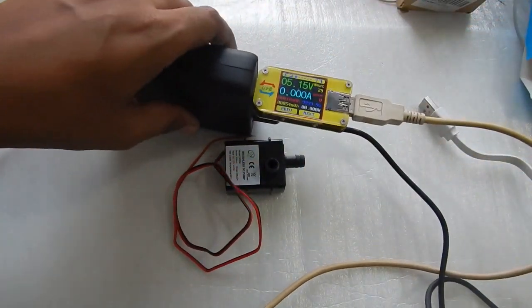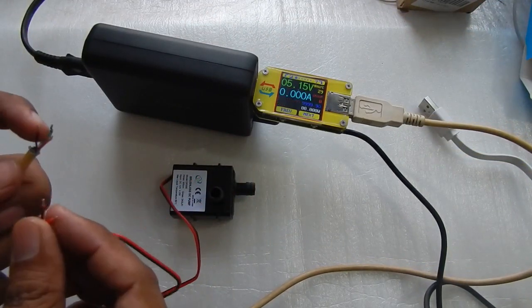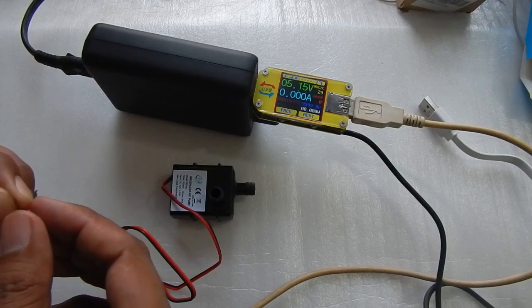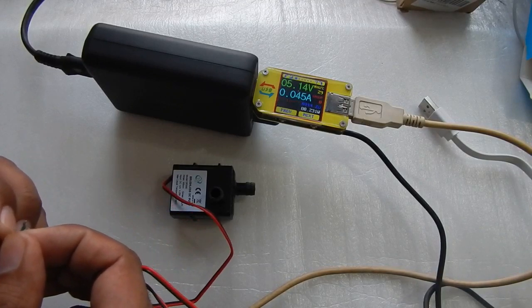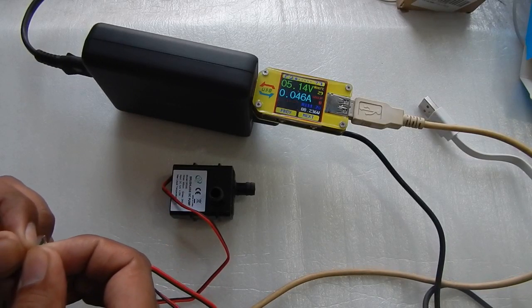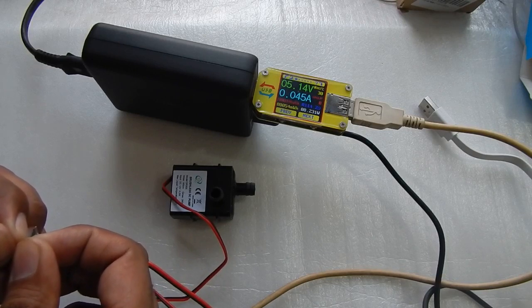You can see we are getting 5 volt and when I connect the pump to the wire we should be able to see the current that we are drawing from the 5 volt charger. So you can see the pump is running and we are drawing very small current about 46 milliamp.